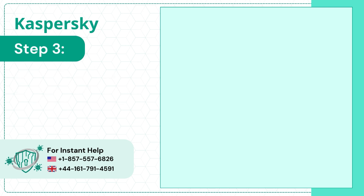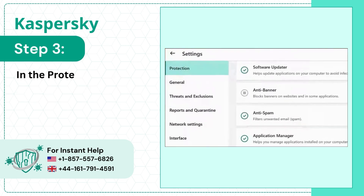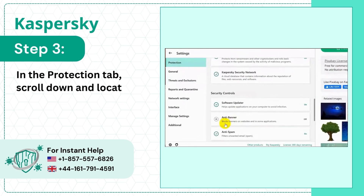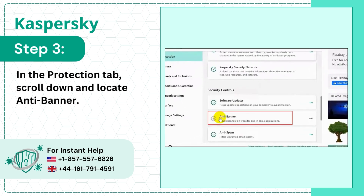Step 3: In the Protection tab, scroll down and locate Antibanner.